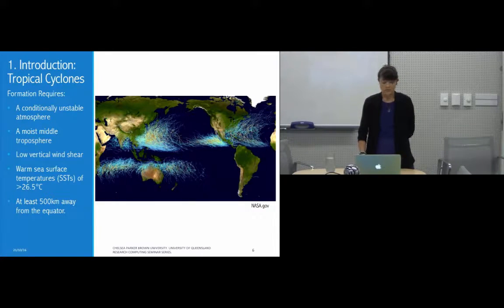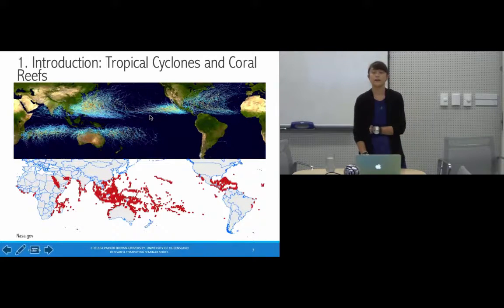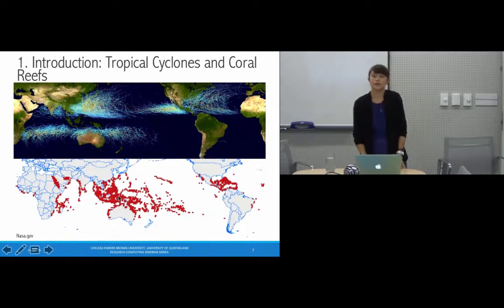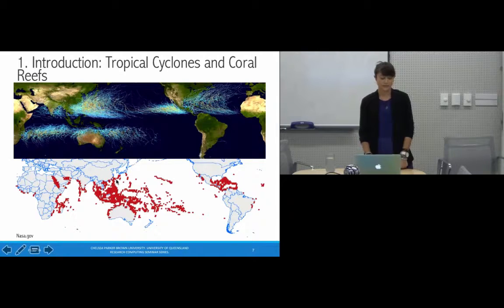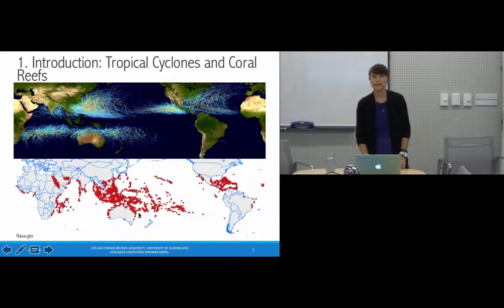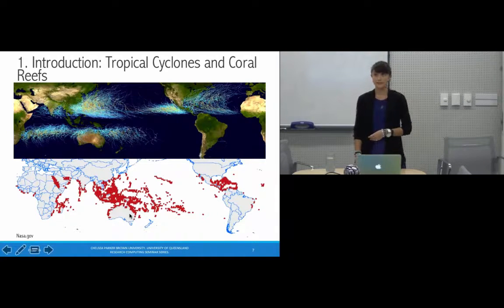On the bottom of this slide we're looking at the global locations of coral reef environments. Comparing the two, although the geographic overlap is not exactly one-to-one, there is substantial overlap — especially in the Caribbean, Southeast Asia, parts of the Indian Ocean, and notably northern Australia, and importantly the Great Barrier Reef, which is a primary area of interest in our work.